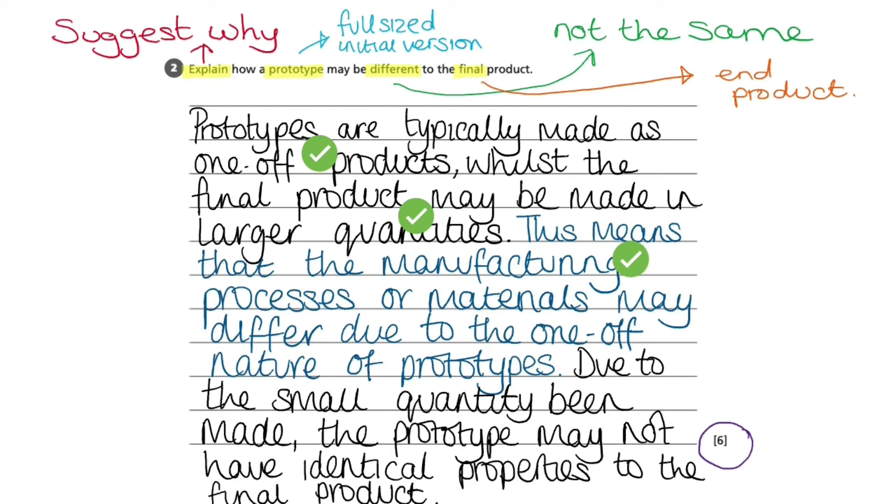Due to the small quantity being made, the prototype may not have identical properties to the final product. And that gave us point five and point six, which means we have answered the question with the full amount of marks available.